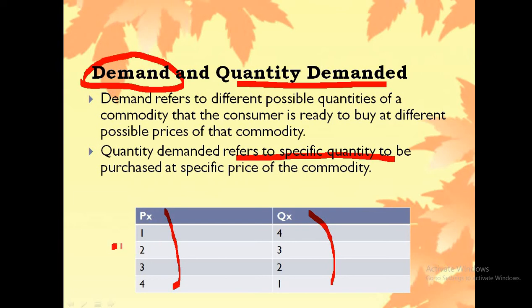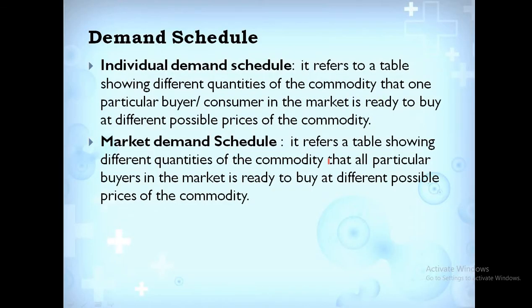Quantity demanded focuses on a specific case — suppose price is two, then the demand is three, so this would be the quantity demanded. When we talk about a specific price and specific quantity, it will be known as quantity demanded. But when we are talking about the whole schedule, it will be known as demand.